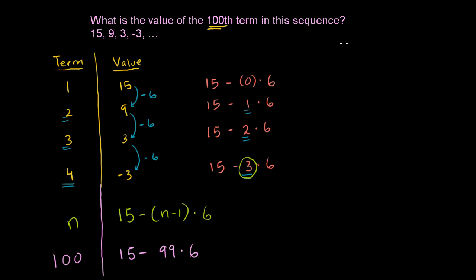What's 99 times 6? So 99 times 6. Actually, you could do this in your head. You could say that's going to be 6 less than 100 times 6, which is 600, and 6 less is 594. But if you don't want to do it that way, you just do it the old-fashioned way. 6 times 9 is 54. Carry the 5. 9 times 6, or 6 times 9, is 54. 54 plus 5 is 594.